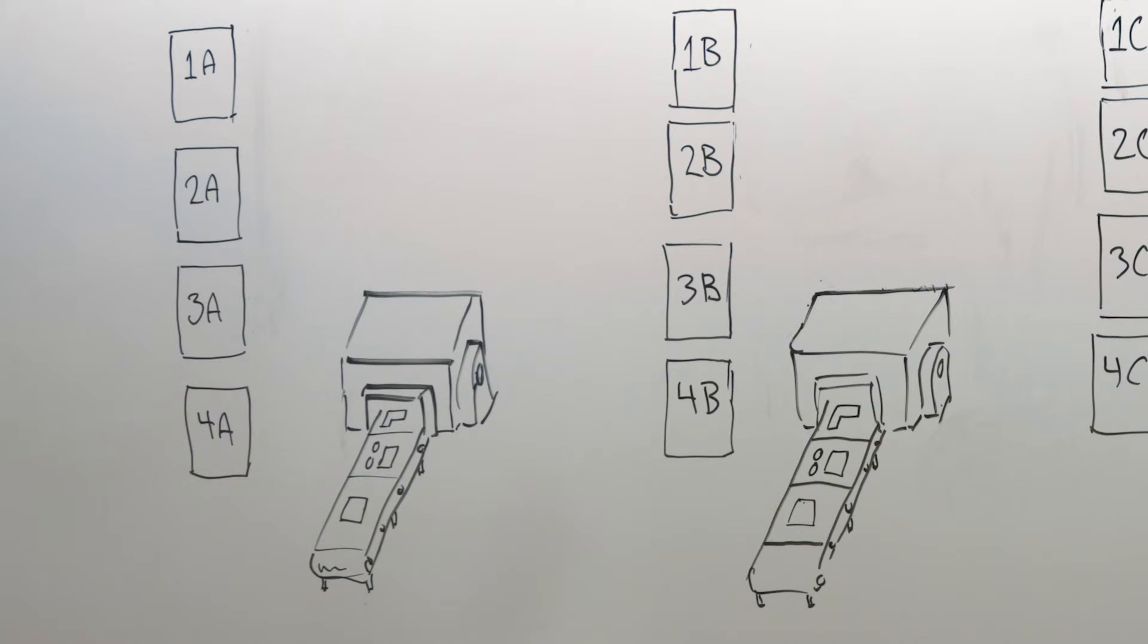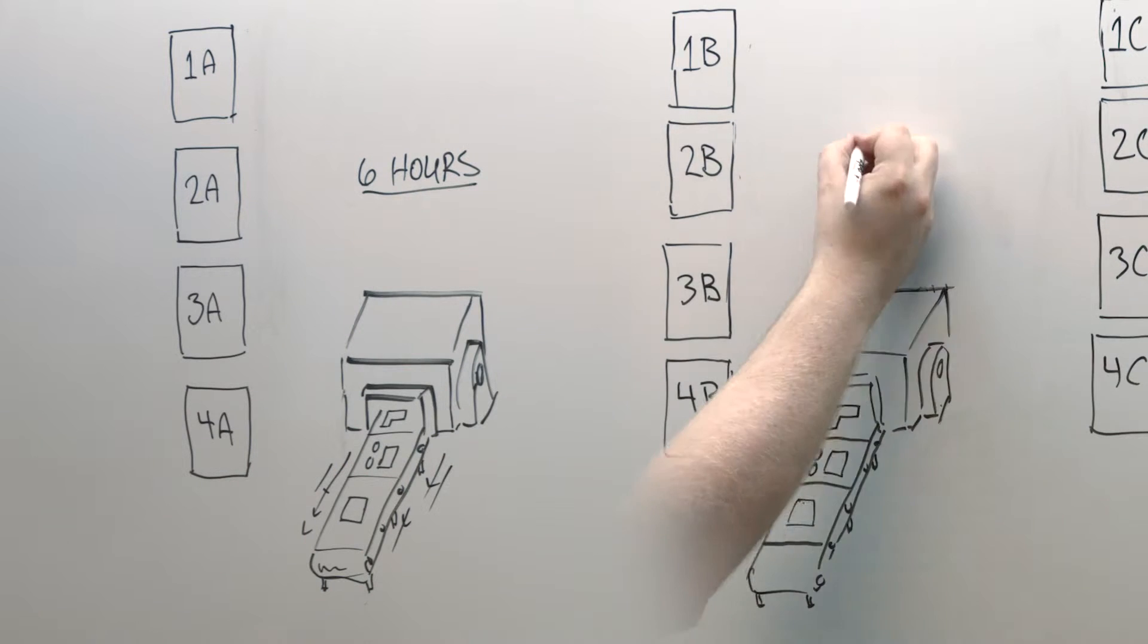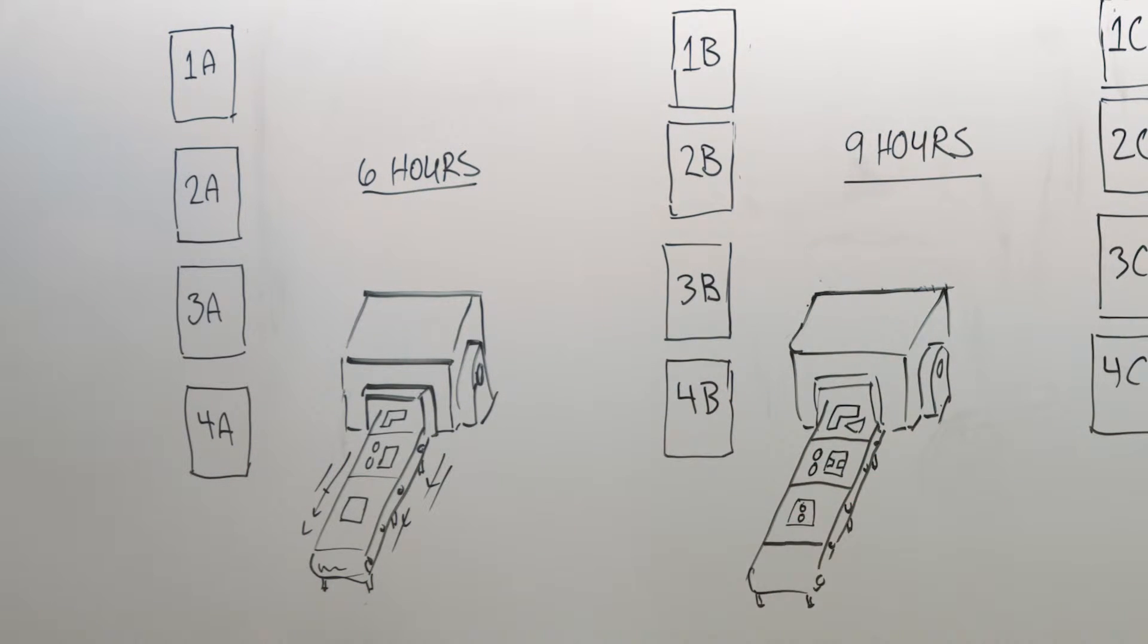Here's another common example. With your old system, machine 1's nesting plan takes 6 hours to complete, and machine 2's nesting plan ends up taking 9 hours.